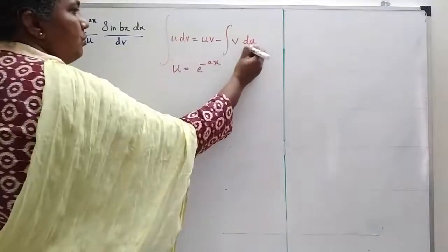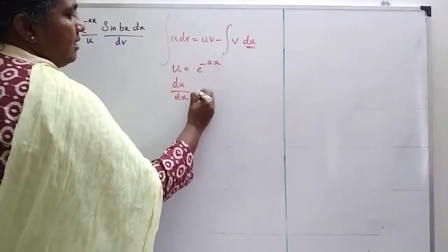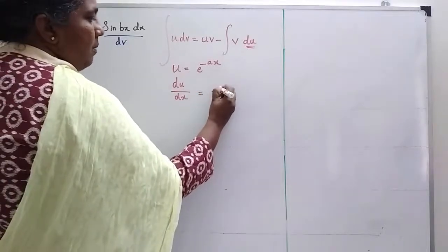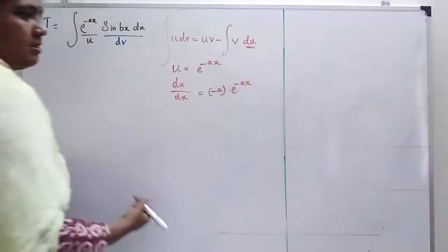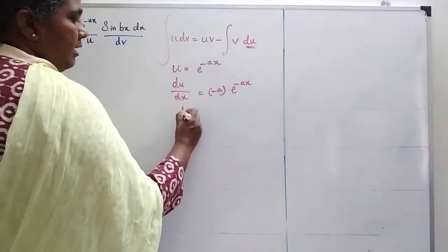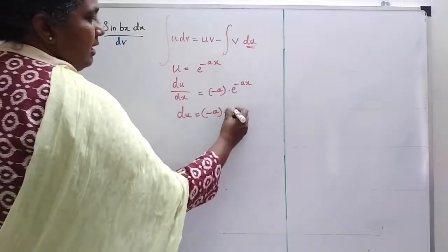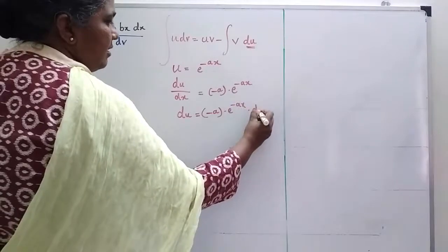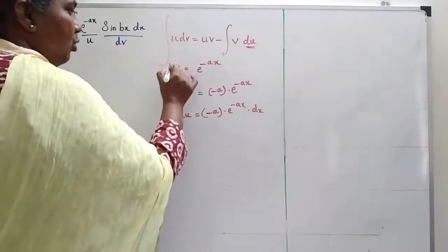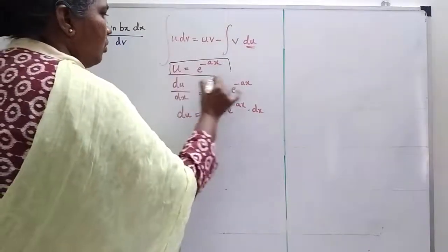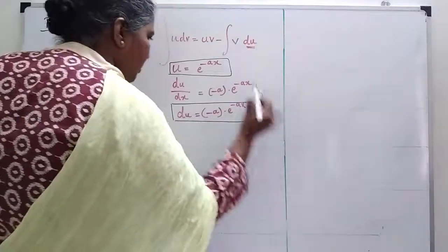I need du. So du by dx is equal to minus a into e power minus ax. Therefore du is equal to minus a into e power minus ax dx. This is my u and this is my du.